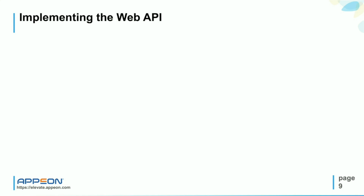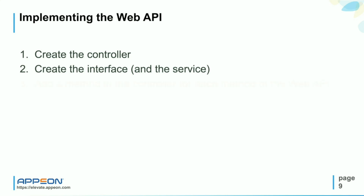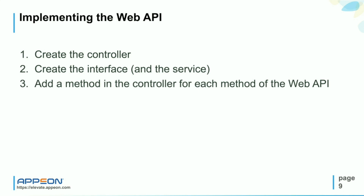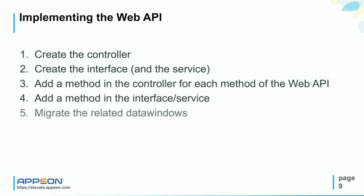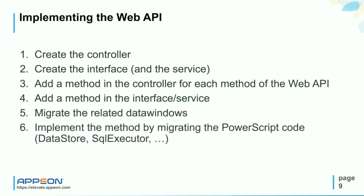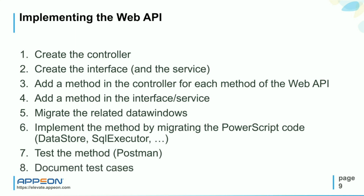Implementing the Web API: after creating the new UI specification and the Web API structure, it is time to implement the Web API. We create the controller, the interface and the related service. We add a method in the controller for each method of the Web API, following the documents prepared earlier. Then we add a method in the interface service, migrate the related DataWindows, and implement the method by migrating the PowerScript code using the Datastore, SQL executor and so on. Then we extensively test each method using tools like Postman, and document the test cases in the Web API definition document. It is very, very important that you test extensively each method.